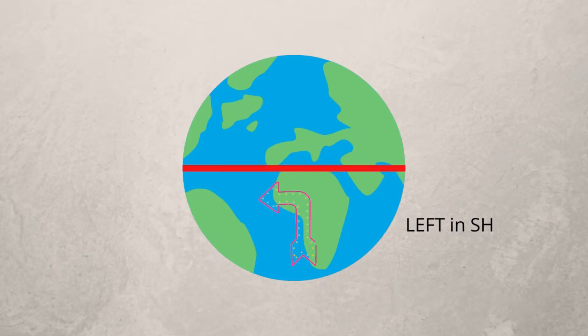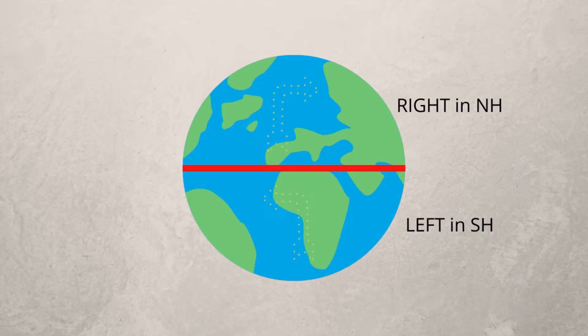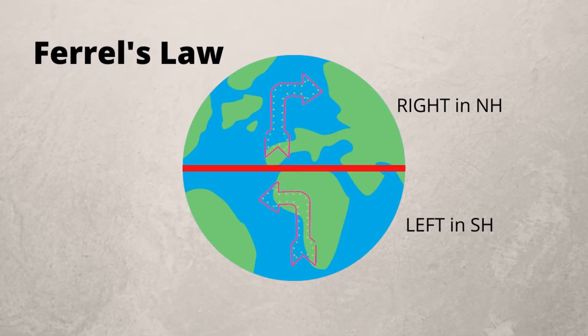Winds deflect in different directions depending on what hemisphere we are in. In the southern hemisphere, winds deflect to the left, and in the northern hemisphere, winds deflect to the right. This rule is known as Ferrell's Law.